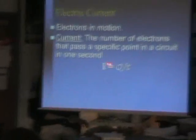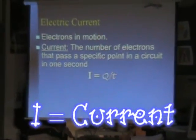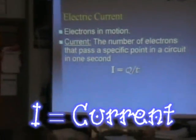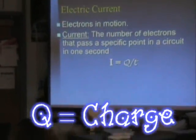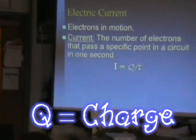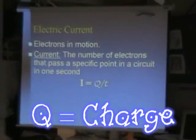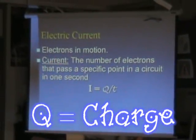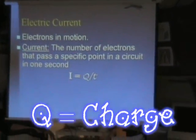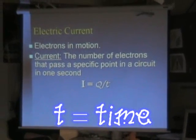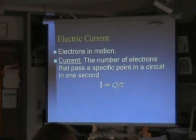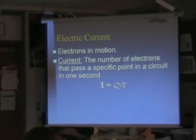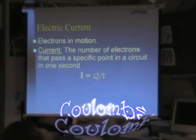I represents current. Q represents the electrical charge. T represents the time period. Charge is in Coulombs.